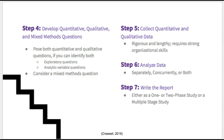The last step is to write your report. Some variations include: if you are writing your report in two phases, the sections of data collection, analysis, and interpretation — one qualitative and one quantitative — are used for each section. If each section is integrating the quantitative and qualitative data, you will see a mix of the two throughout your paper.